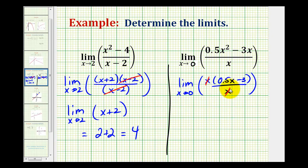And so that tells us that the given graph is the same as the graph of 0.5x minus 3 without the hole or removable discontinuity at x equals 0.